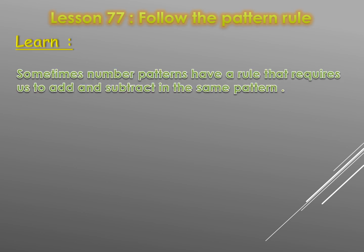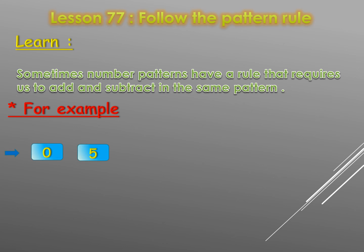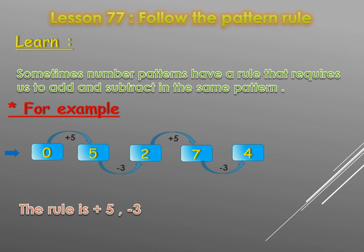Lesson number 77: follow the pattern rule. Sometimes number patterns have a rule that requires us to add and subtract in the same pattern. For example: zero becomes five — that's plus five; five becomes two — that's minus three. Two plus five equals seven, seven minus three equals four. As we see, the pattern rule is plus five, minus three.